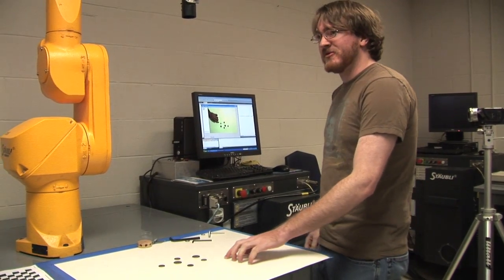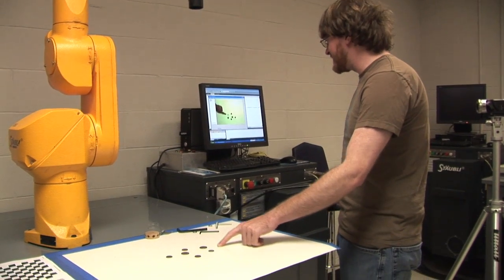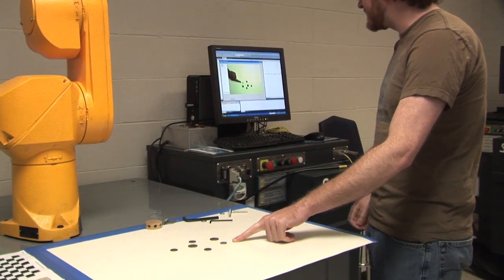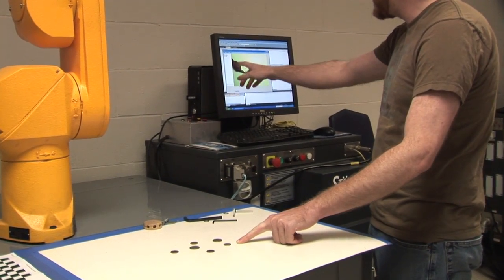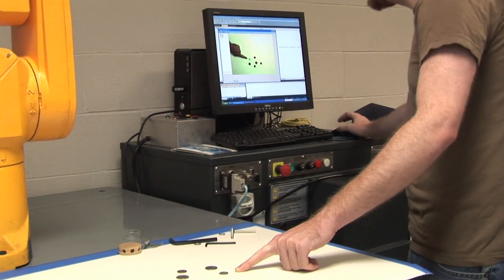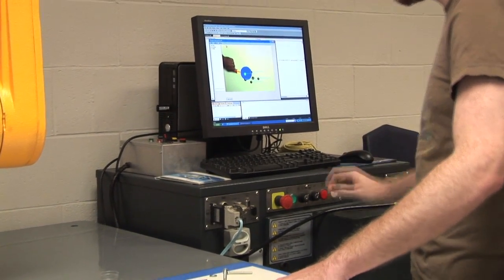The pointing feature of this program recognizes where your hand is in the image and then draws a line out of your hand, which you can actually see here.